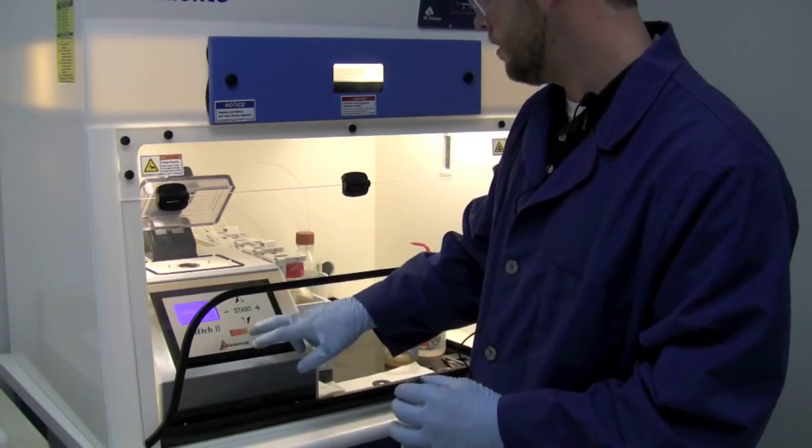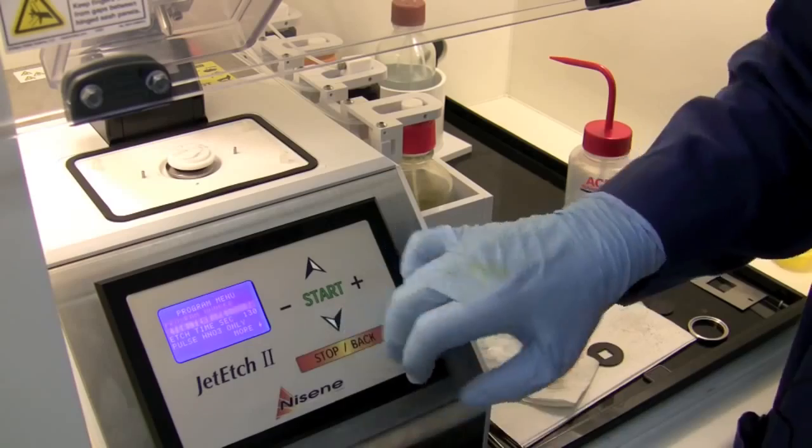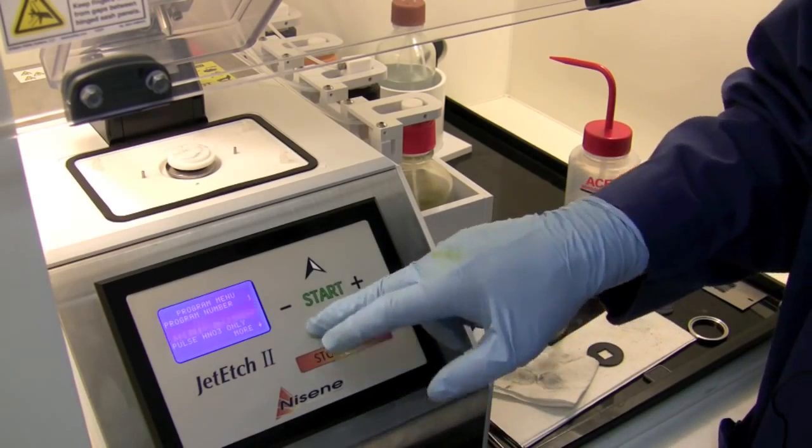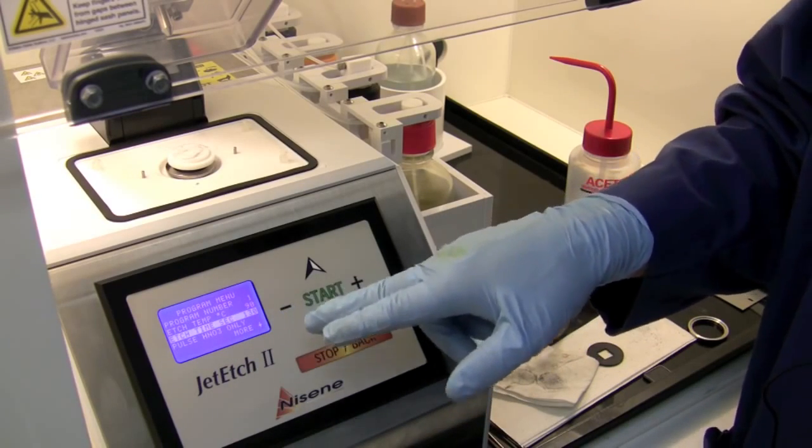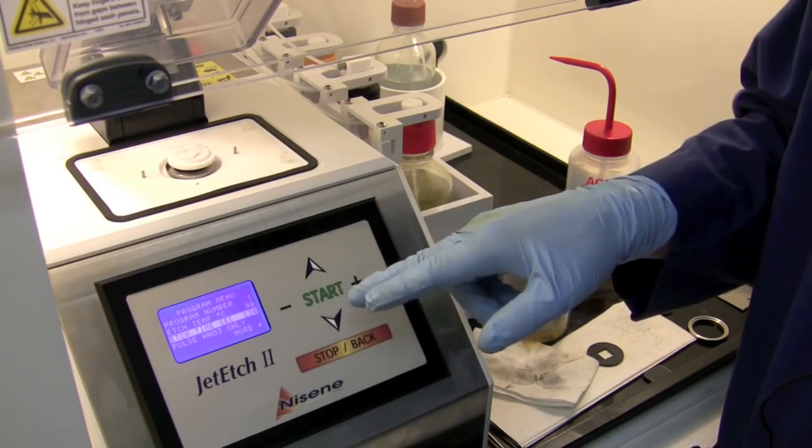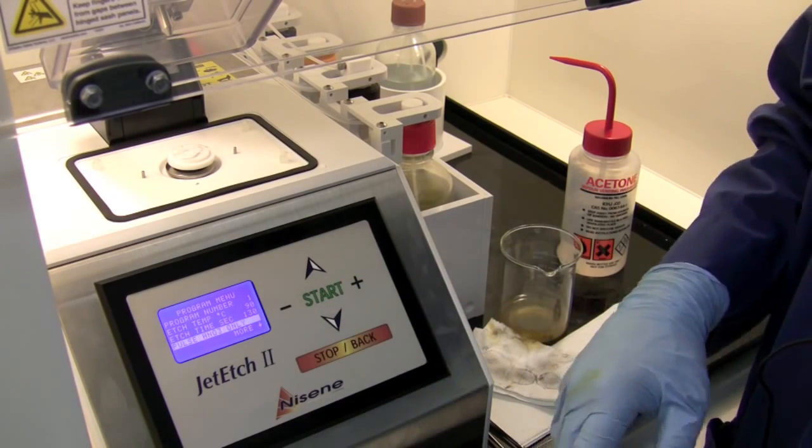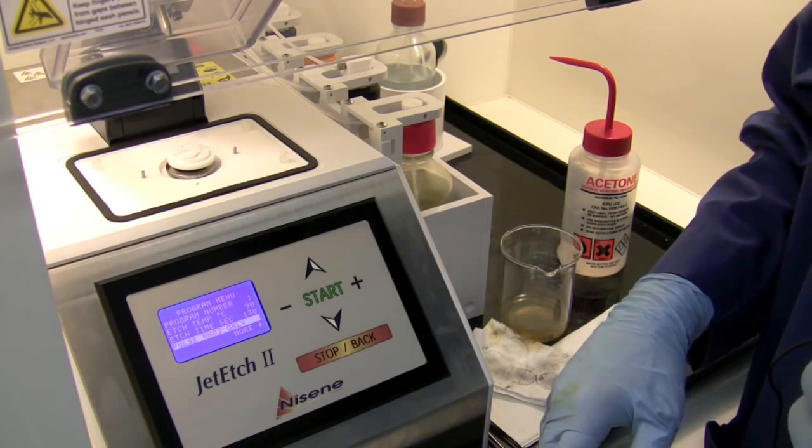First thing we're going to do is select our program. Right now we're going to be running this at 90 degrees C for an etch time of 130 seconds using nitric acid only. We have an etch volume of 3 and a heat up time of 60 seconds.